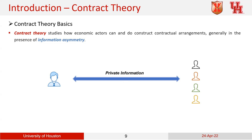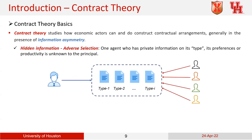Under the contract theory framework, we have three major models. The first is called adverse selection, used for dealing with hidden information. We have two sides: the game designer and the game participants. The game designer has prior knowledge about the distribution of private information and designs a menu of different contract types. Game participants then select the corresponding type of contract by themselves.